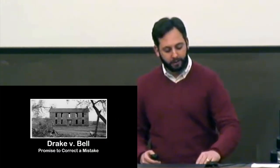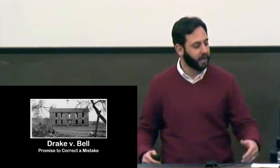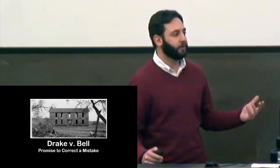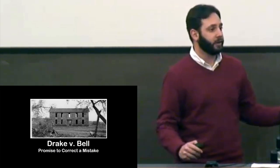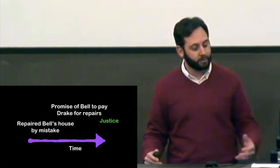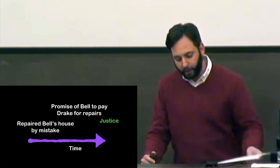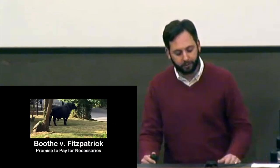Drake v. Bell is the case involving a promise to correct a mistake. A person fixes the wrong house — that was a mistake — and then another person comes in and promises to pay for the repairs. The court finds that promise enforceable.